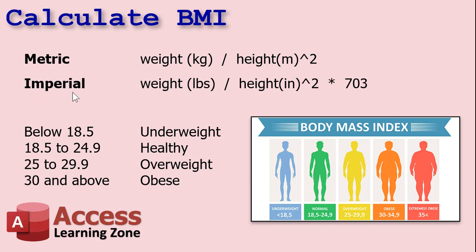If you're using the imperial system like we are here in the United States, it's your weight in pounds divided by your height in inches squared, times 703. That 703 is the conversion unit to go from metric to imperial. So you just multiply by 703 and you'll get a number.